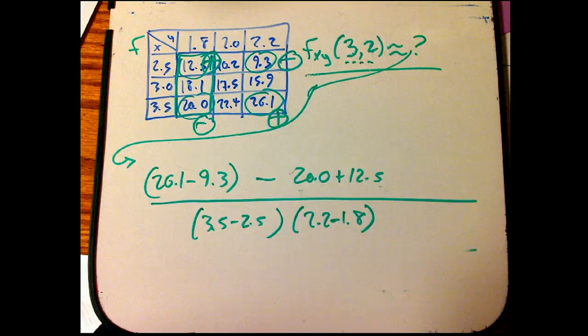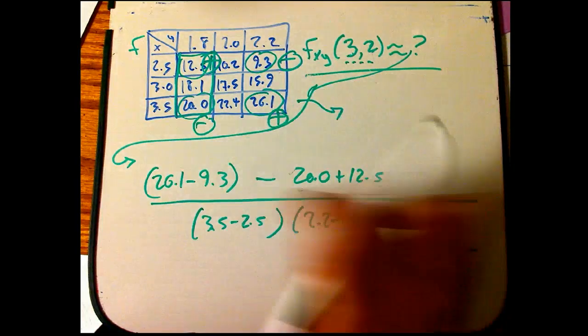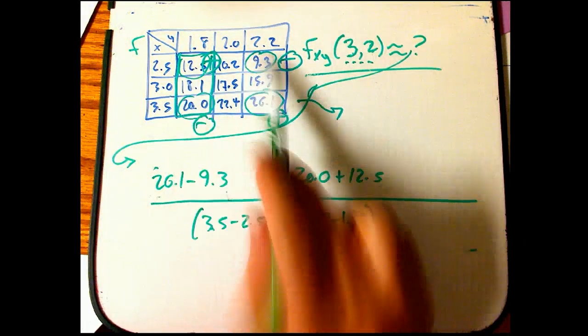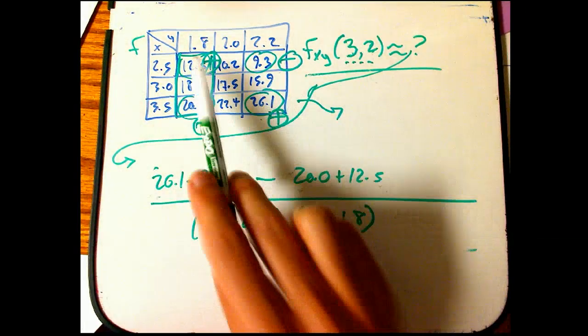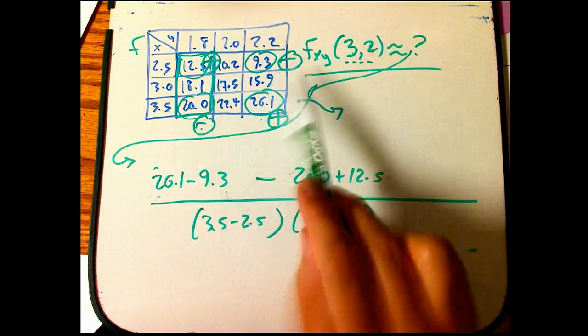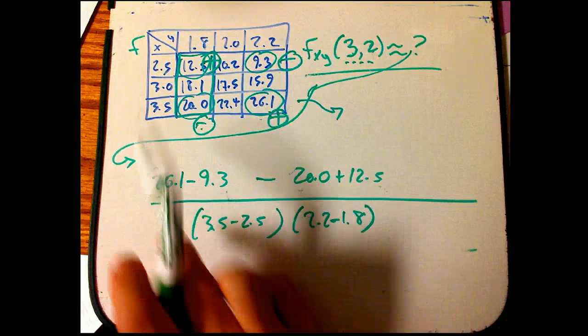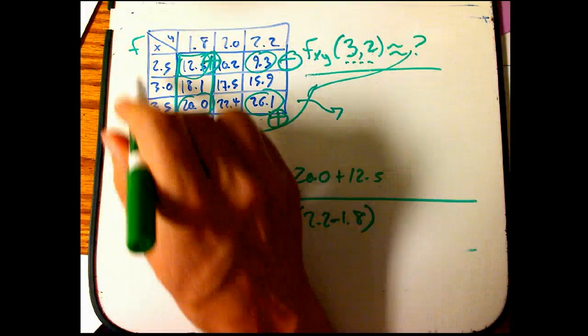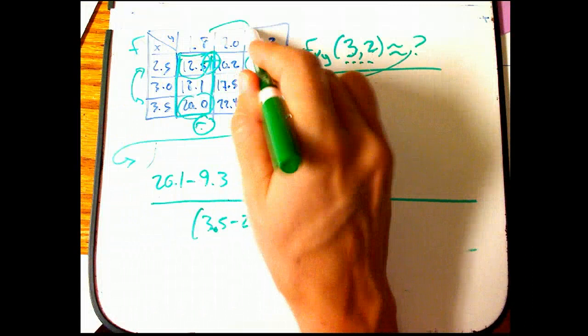So there is actually a slick way of doing it all at once, which is just to look at the four corner points. Remember this plus along the diagonal and minus on the anti-diagonal. Take that combination of the values, and then divide by the product of the distance in x you went and the distance in y you went.